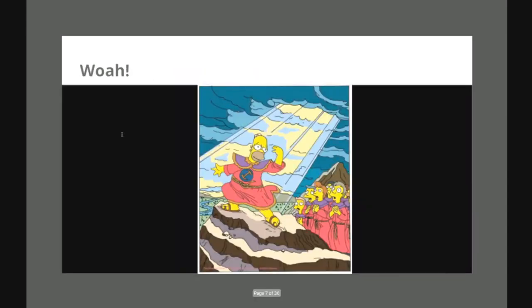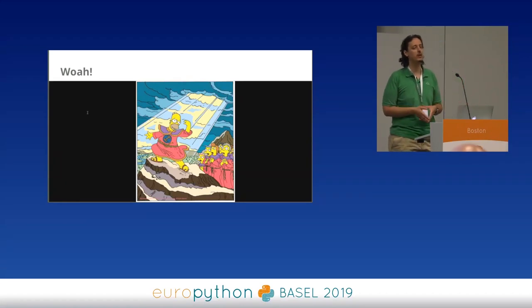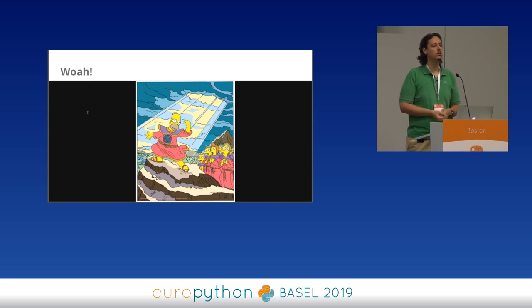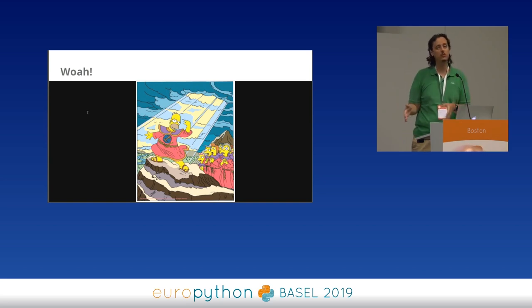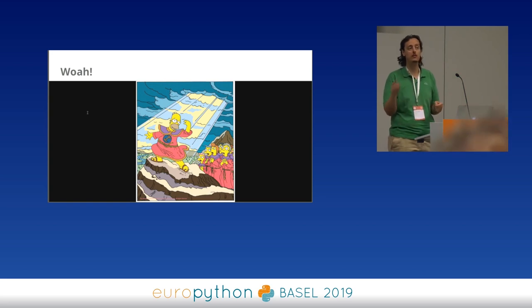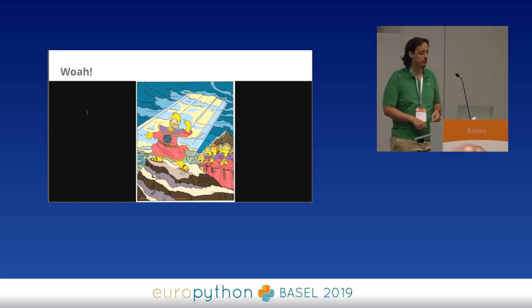If this is used properly, you are going to receive an email for every single error your application faces, so you know before your users start to complain. This requires just two lines of code: you decorate the entry point of your application or the most important functions, and you get notified. It works especially well in web development because you have a single entry point called by the WSGI server every time it has to serve a request, so every time a request crashes, you get notified.